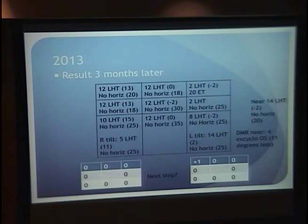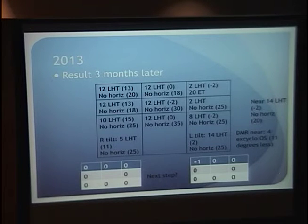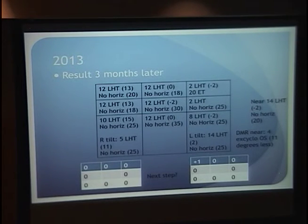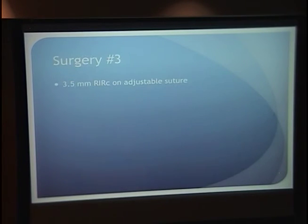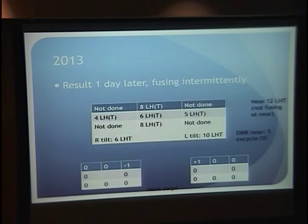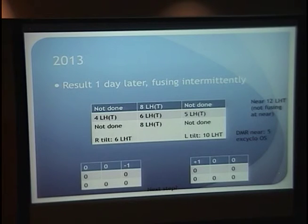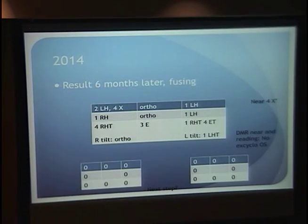Any thoughts on the next procedure for a comitant hypertropia in a patient who's had those previous surgeries? She went from 12 to 2 millimeters. The previously recessed right inferior rectus — that is what she had on an adjustable suture. The first day after surgery she was starting to fuse. She still had her hypertropia most of the time but was starting to fuse. It was comitant across the board, her horizontal was gone, and she could control the excyclotorsion herself with fusion. Then months later she came back and was fusing in all gaze positions. I did have a parade and fireworks — I was so happy.